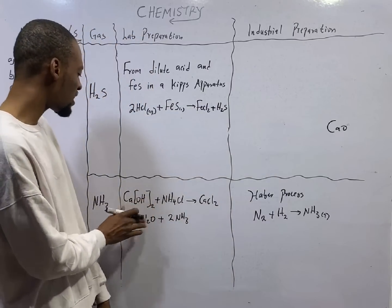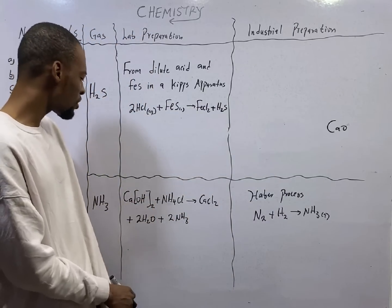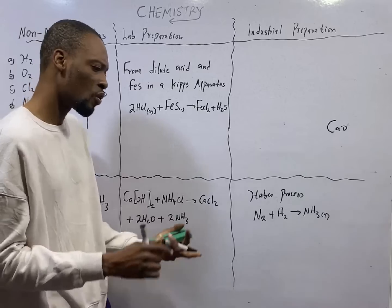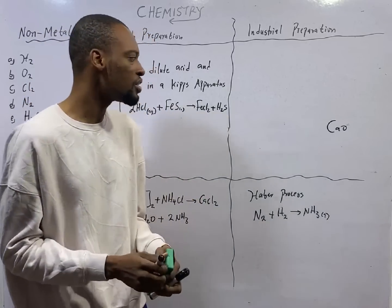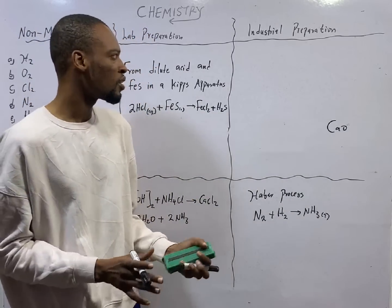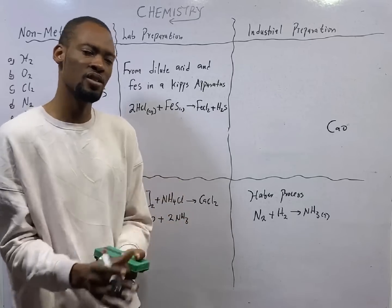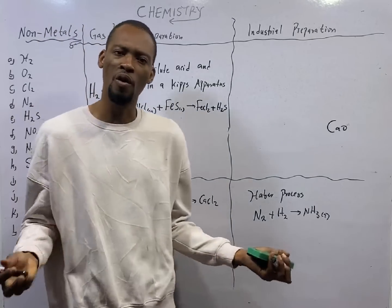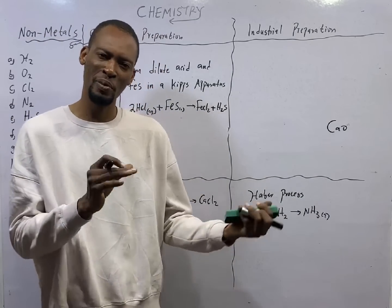So, this is a JAMB past question. Why is slaked lime used in the production of ammonia? 1. It is cheap. And 2. It is non-deliquescent. Go back to acid, bases, and salt if you need to know more under the properties of salt, preparation, and uses of salts.